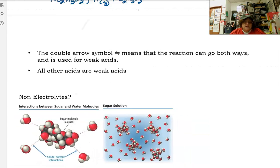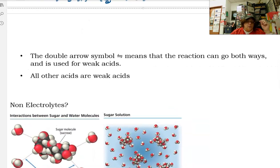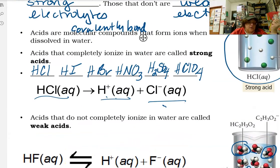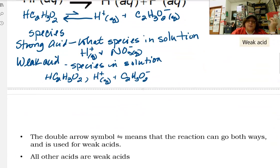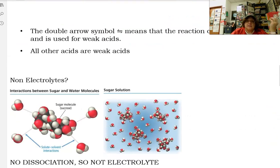The double-arrow symbol means that the reaction can go both ways, and we use that to represent weak acids. All acids other than our six that we just talked about, hydrochloric, hydroiodic, hydrobromic, nitric, sulfuric, and perchloric, everything else that's an acid is weak.